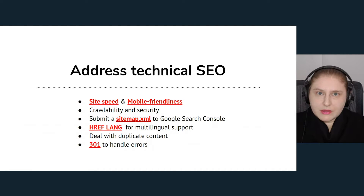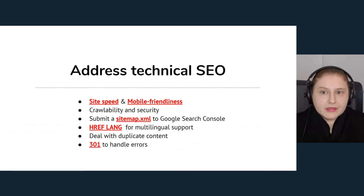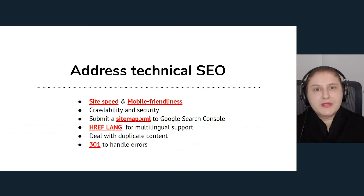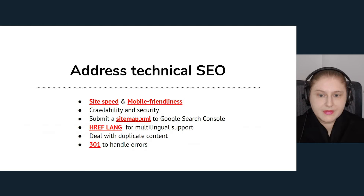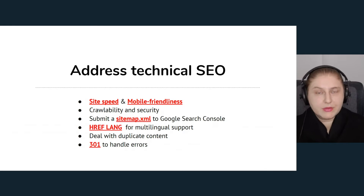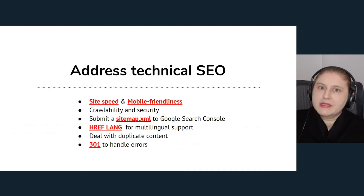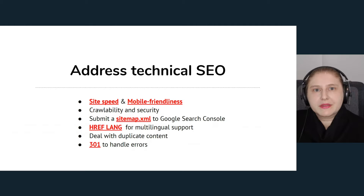For technical SEO — distinct from content SEO — make sure your documentation loads fast and is mobile friendly, ensure bots can crawl it, and that it's secure, since that's a major trust signal for search engines. Submit a sitemap file so Google knows which pages are in your documentation. If you have multilingual support, make sure your hreflang tags are squared away to indicate whether the Spanish or Mexican version of Google should show a given page. Handle duplicate content and use 301 redirects when moving or removing content.